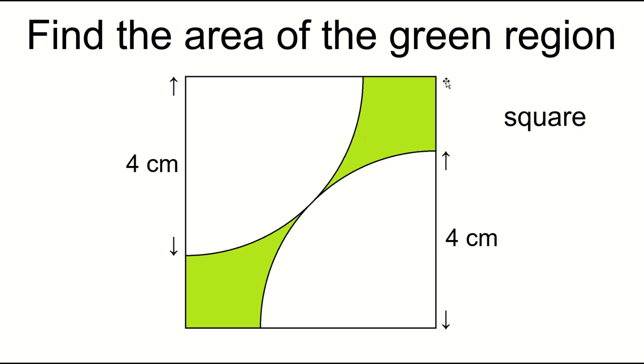This is a square. Two quarter circles fit inside the square. The radius is 4 centimeters. How do you solve this problem? The area of the green region can be calculated by subtracting the area of the two quarter circles from the square.